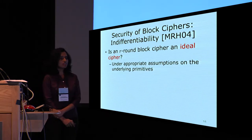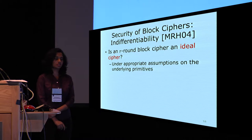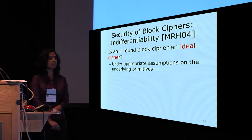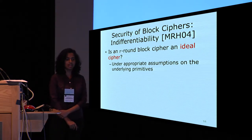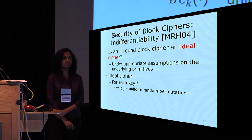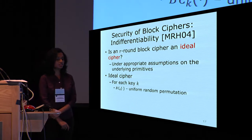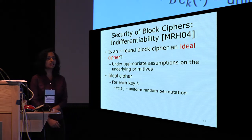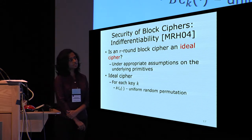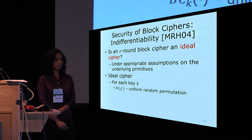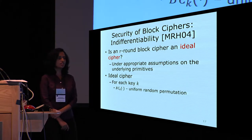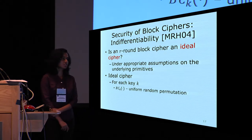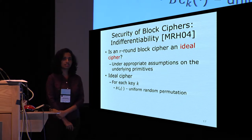One can consider block cipher security under a stronger notion called indifferentiability, proposed by Maurer, Renner, and Holenstein. This asks whether a block cipher behaves as an ideal cipher under appropriate assumptions on the underlying primitives. An ideal cipher is one where for each key k, the block cipher induces a uniform random permutation. This is useful because block ciphers can be used in constructions where the distinguisher has access to the key k — for example, in block-cipher-based hash functions where the distinguisher can influence the key.